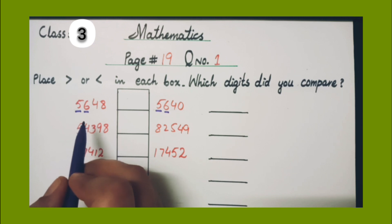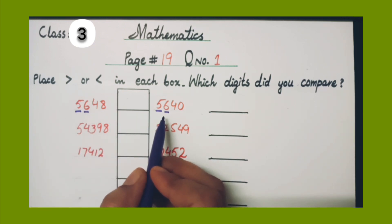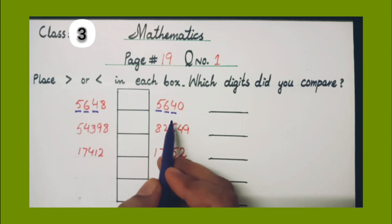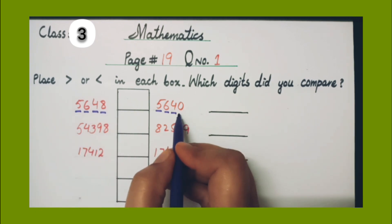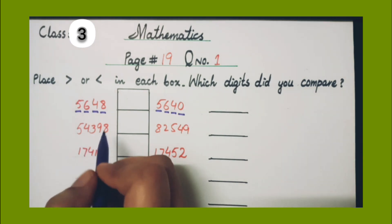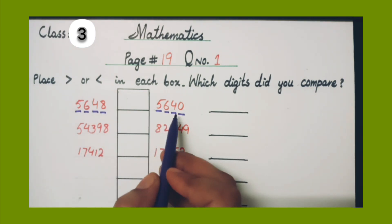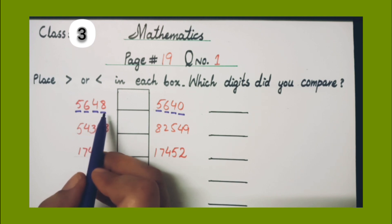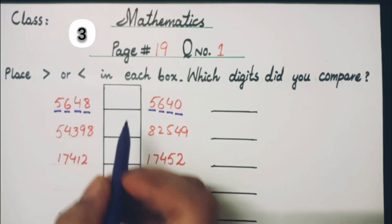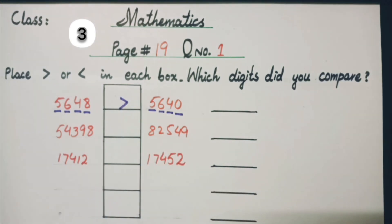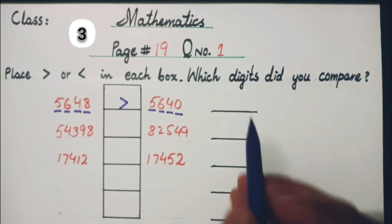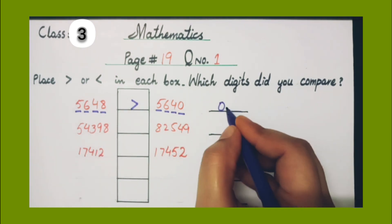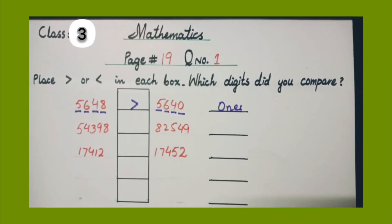If the values are the same, then we have to move to the next place value, which is hundreds. At the hundreds place we have six at both places — same again — so we move forward to the tens place. That is four at both — same again. We move to the ones place, where we have eight and zero. Eight is greater than zero, so here we will put the symbol of greater than. We compared the ones place.